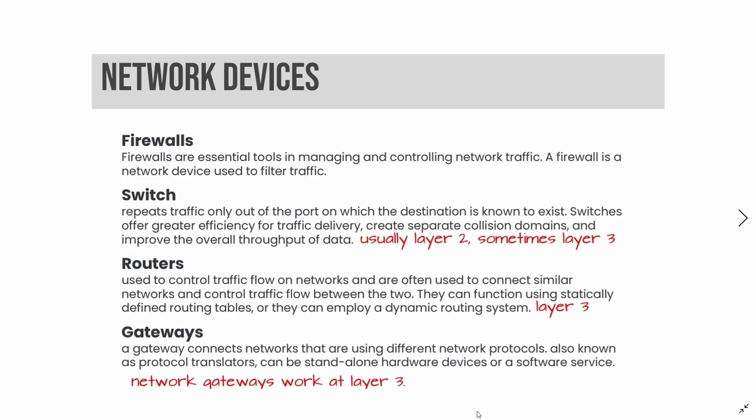Network devices include firewalls, switches, routers, and gateways. Firewalls are essential tools in managing and controlling traffic. Switches repeat traffic only out of the port for which the destination is known to exist. Switches offer greatest efficiency for traffic delivery, create separate collision domains, and improve the overall throughput of data. They usually operate at OSI model layer 2.